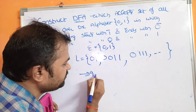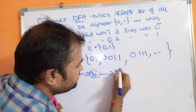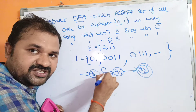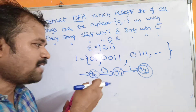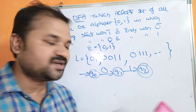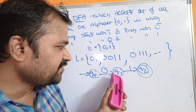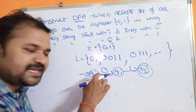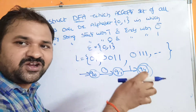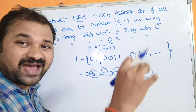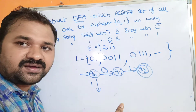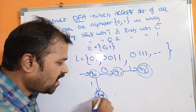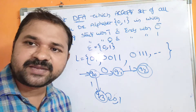Let the first state be Q0 (the starting state), the next state Q1, and the next Q2 where Q2 is the final state. The constraint is: every string starts with 0 and ends with 1. If a string starts with 1, it will not be accepted by the DFA — it is not a valid string — so we go to dead state Q3. On Q3, we can apply any number of 0s and 1s, but we remain at Q3 only.